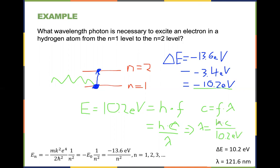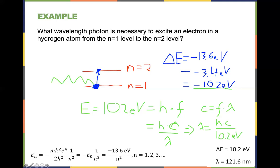Dividing h times c by 10.2 eV gives a wavelength of 121 nanometers — not quite green light, it has a bit more energy and a shorter wavelength than green light. That is how you calculate what type of light you need to kick an electron from a low energy state to a higher energy state. It's worthwhile running through this example since we'll do it quite a bit in this lecture.